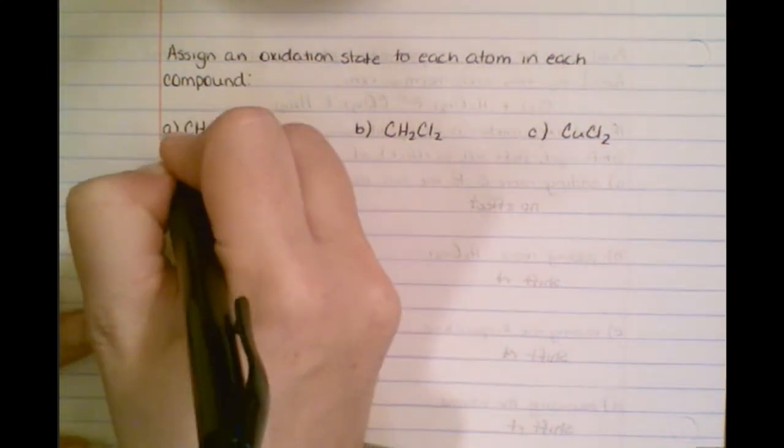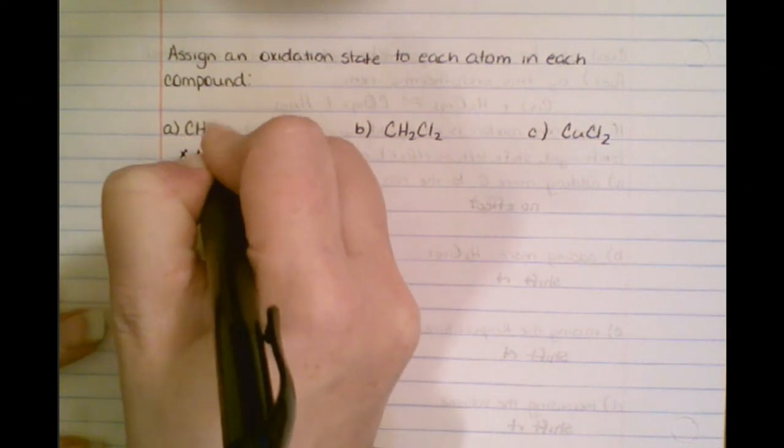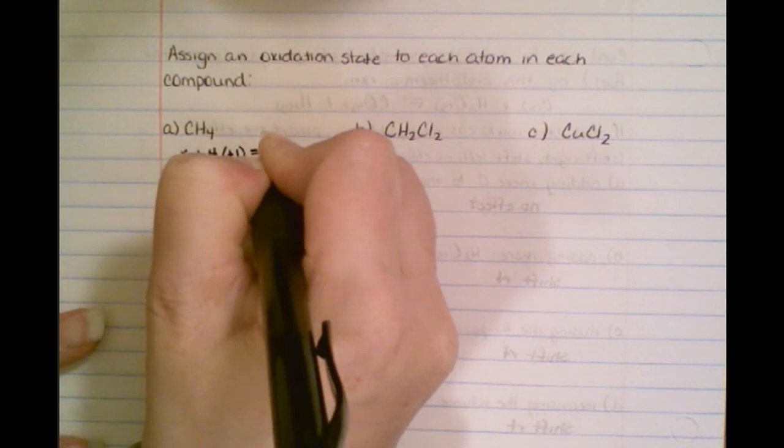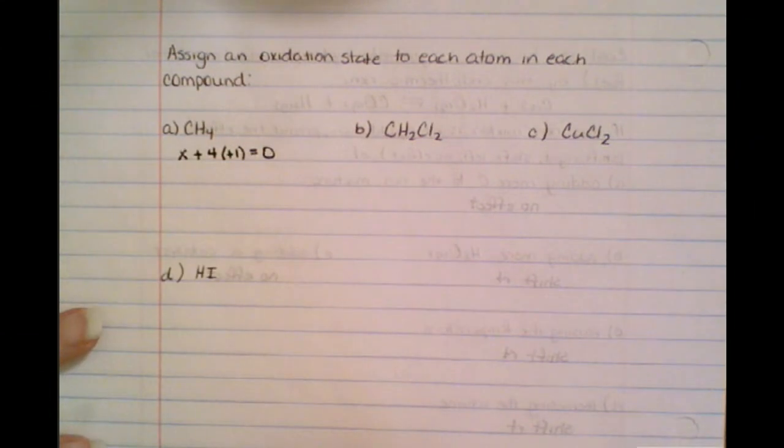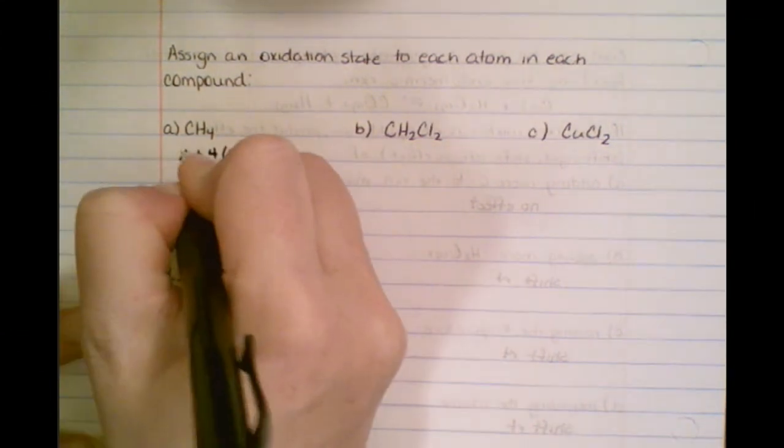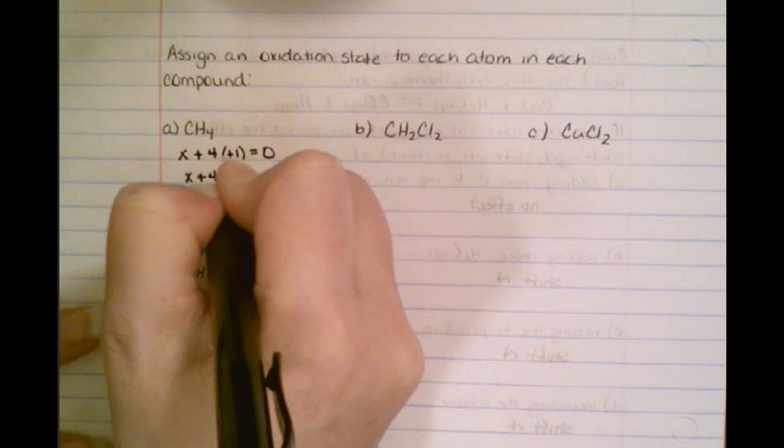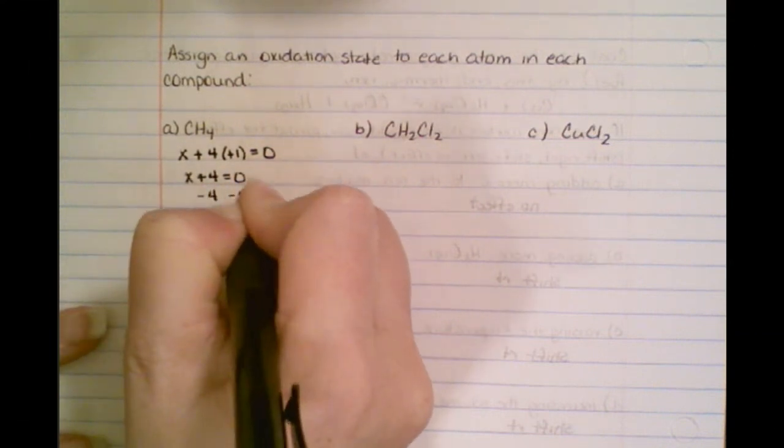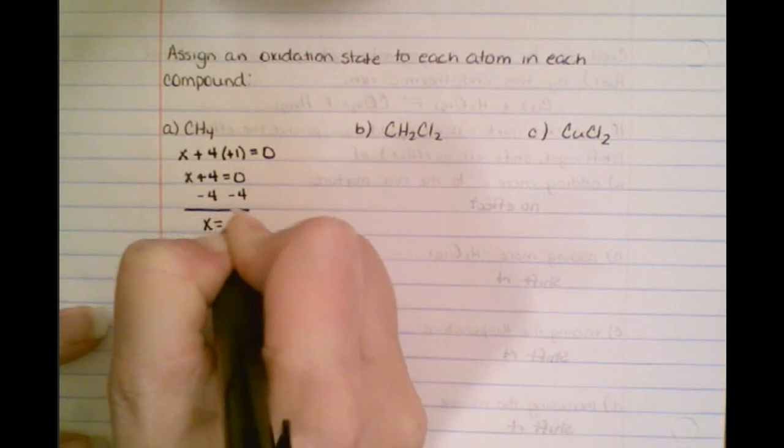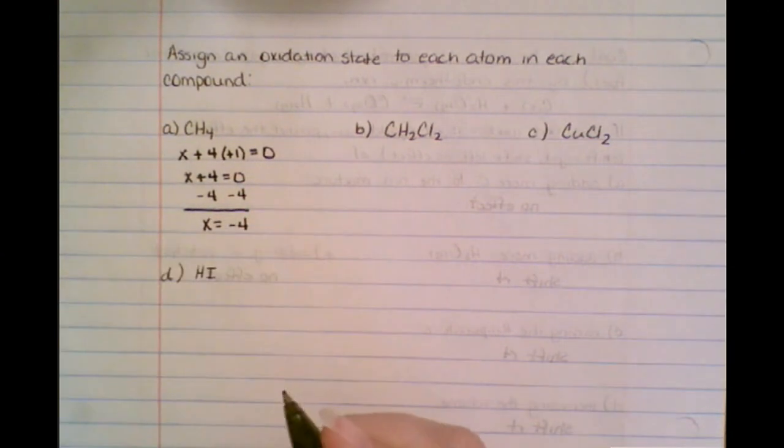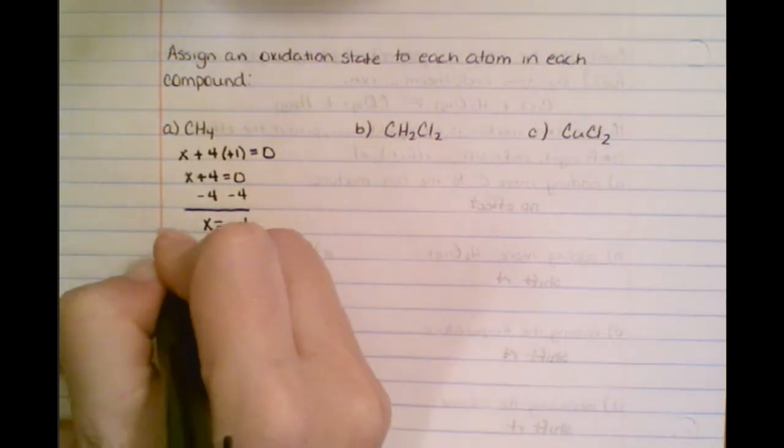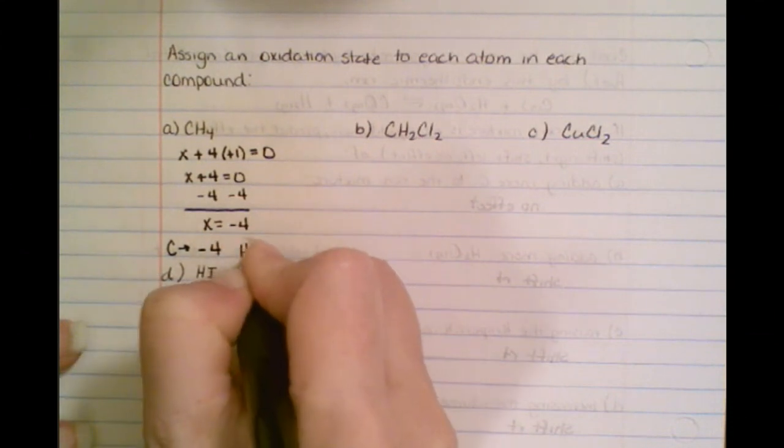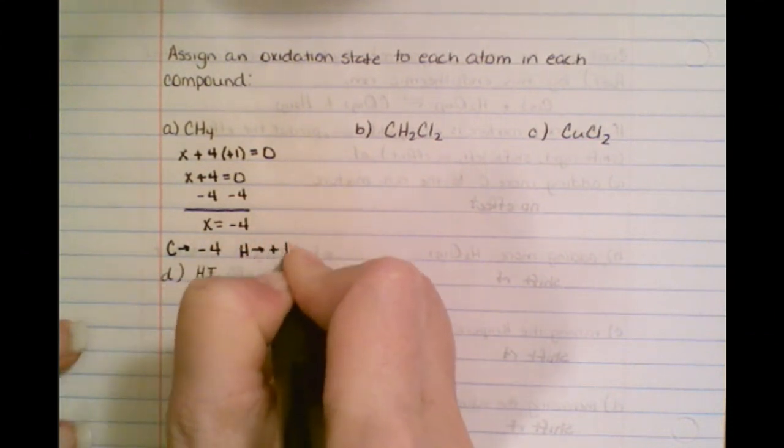So we notice that carbon is variable. We have four hydrogens, which are always a plus one, and the overall charge is zero. So this just becomes x plus four. We want to solve for x. So it says x equals negative four. So your charge on your carbon is a negative four, and on your hydrogen is a plus one.